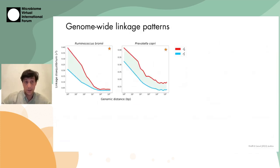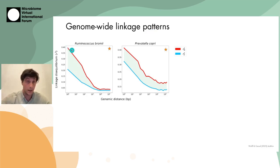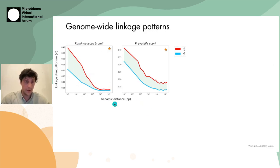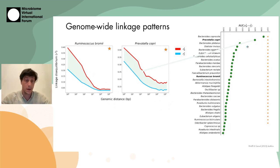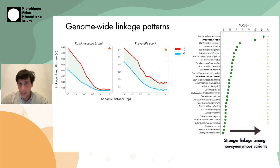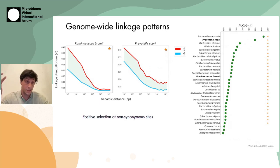Before looking for specific variants under selection, we first wanted to see if non-synonymous variants tend to be more tightly linked in general across the entire genome. What we found is that yes, they are much more tightly linked. Here we have two species — non-synonymous linkage is shown in red, synonymous linkage in light blue, and the difference between these two is shown in green. Non-synonymous linkage is much stronger than synonymous linkage in most of these species, which is consistent with positive selection at some percentage of sites.